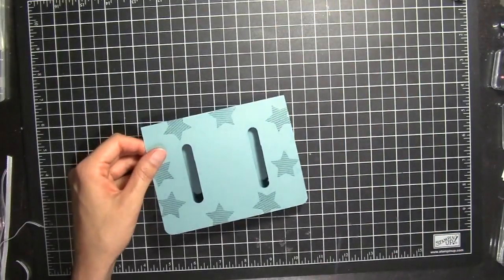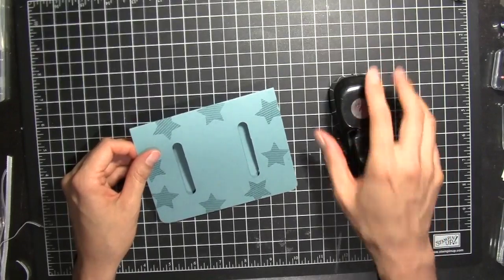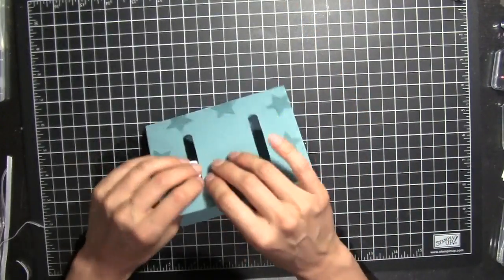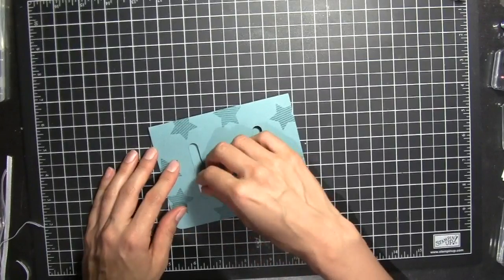Then I'm going to punch out, I've already punched out two three-quarter circles and I've got the Stampin' Up Dimensionals on there. The Stampin' Up Dimensionals work perfectly.